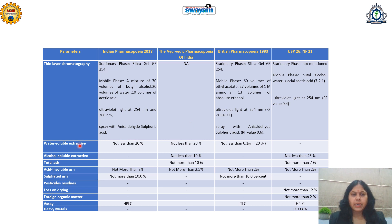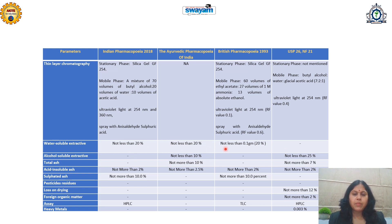The next parameter is water-soluble extractive value, which measures how many chemical constituents soluble in water can be extracted using a typical procedure mentioned in the pharmacopoeias. This parameter is mentioned in the Indian Pharmacopoeia, Ayurvedic Pharmacopoeia, and British Pharmacopoeia, but not in USP. In all three, the standard value is the same — not less than 20%. The alcohol-soluble extractive value is not mentioned in the Indian Pharmacopoeia and British Pharmacopoeia, but is mentioned in the Ayurvedic Pharmacopoeia and USP, with a difference in values: not less than 10% per Ayurvedic Pharmacopoeia, and not less than 25% per USP.